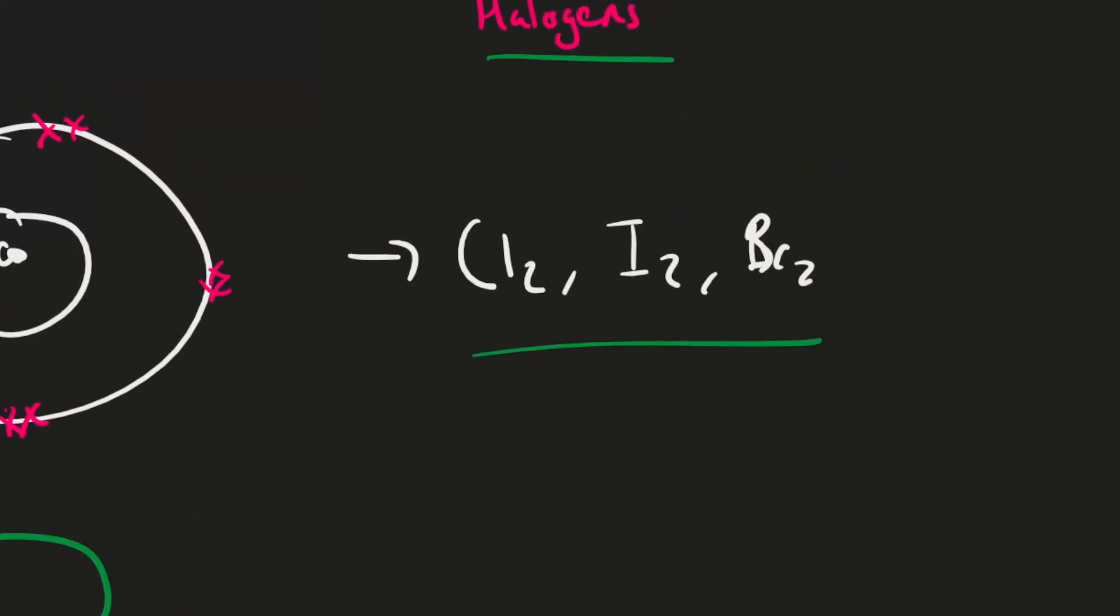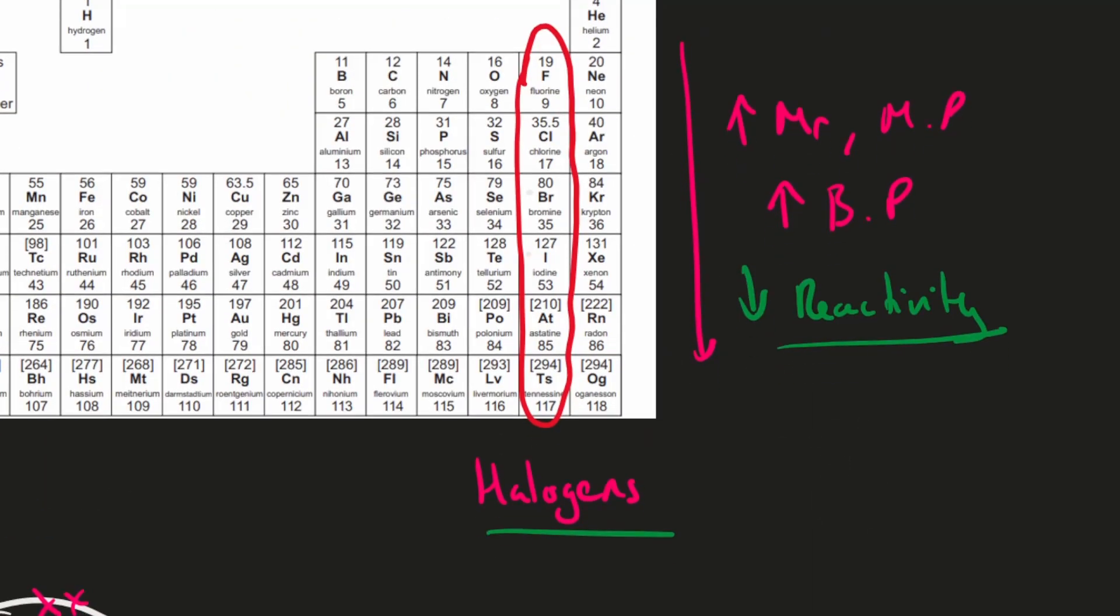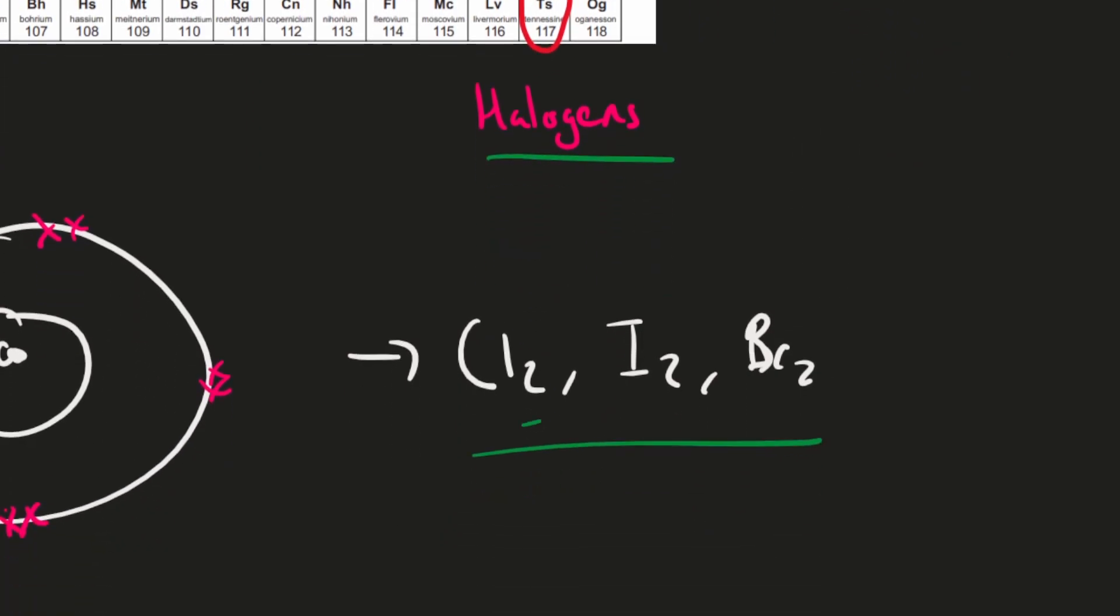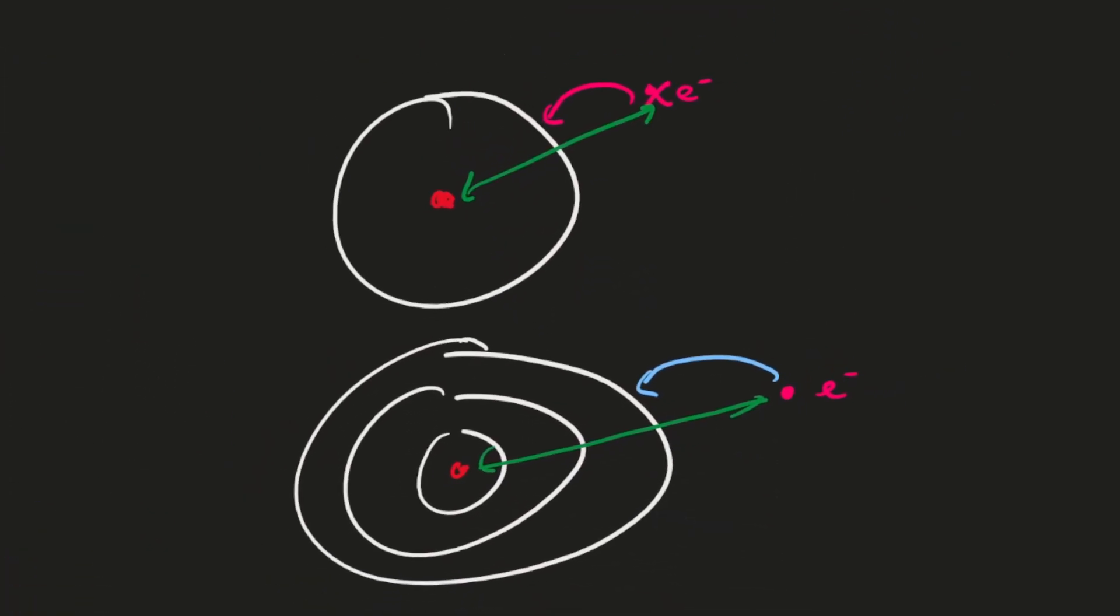Now one thing we can notice: these are all diatomic molecules, so they always form Cl2, I2, or Br2 when they're in their natural molecular form. They always form these molecules with a 2 like that. And there you can see an explanation of what's going on. As the distance increases, it's harder to gain that electron, so they become less reactive.